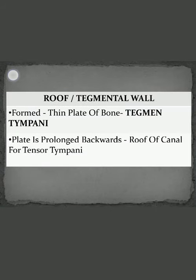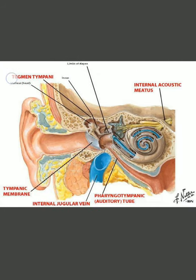The first is the roof of the middle ear cavity, also known as the tegmental wall. It is called the tegmental wall because it is formed by a thin plate of bone known as the tegmen tympani, which is part of the petrous portion of the temporal bone. The same plate is prolonged backwards and forms the roof for the canal of the tensor tympani muscle.